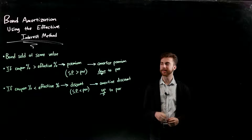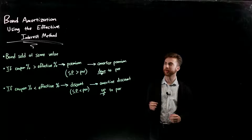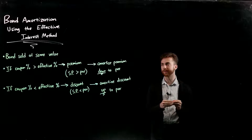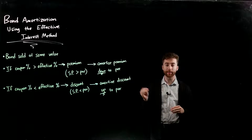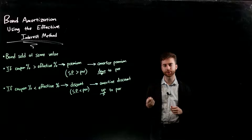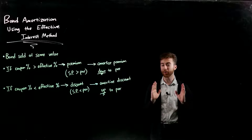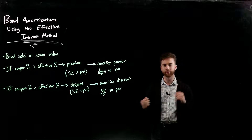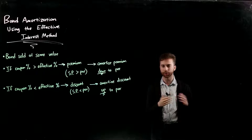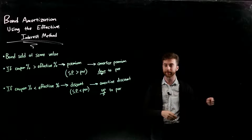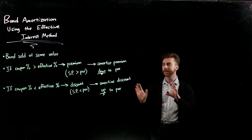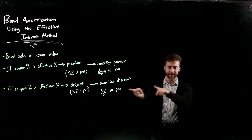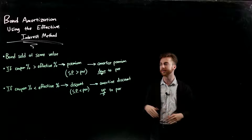Hi everyone. My name is Zach Vines, and what I want to go over today is how to actually calculate and do the journal entries for bond amortization when we're using the effective interest method. I want to briefly touch on what's going on at a high level before we get into the nitty gritty of the calculations involved to find those journal entries — just the point of why we're doing this — and then we'll segue into the actual calculations themselves.